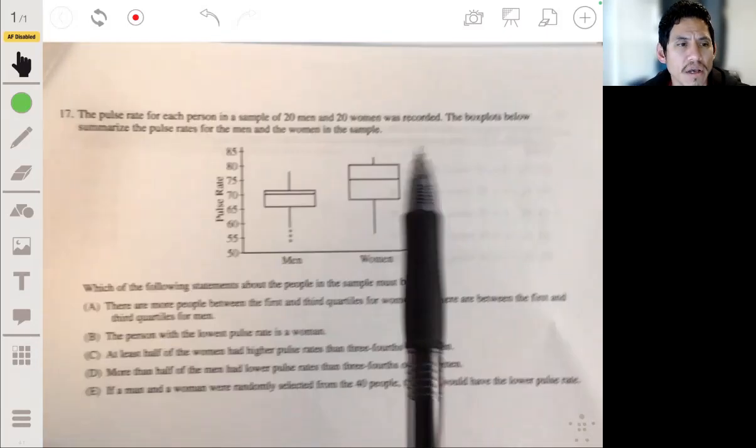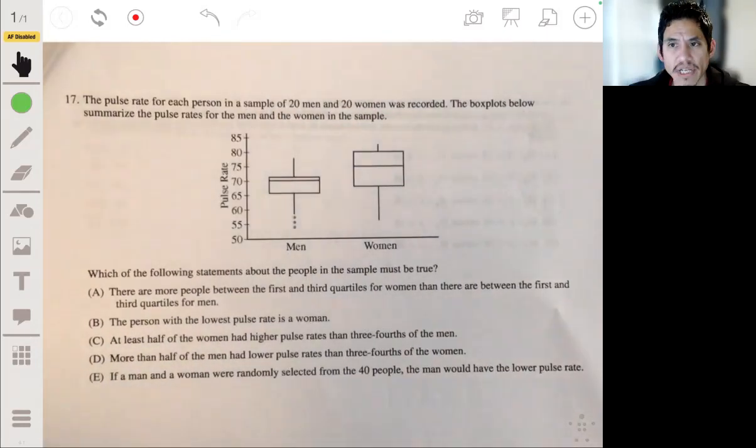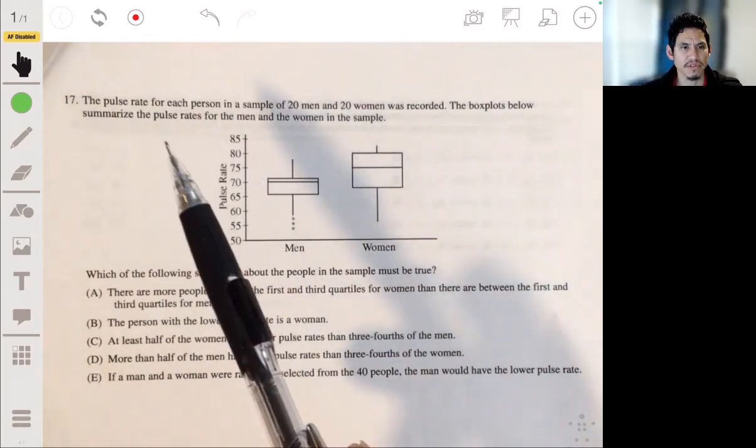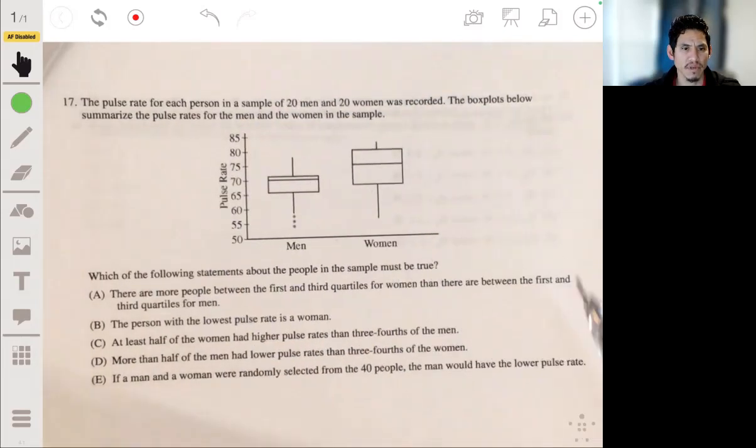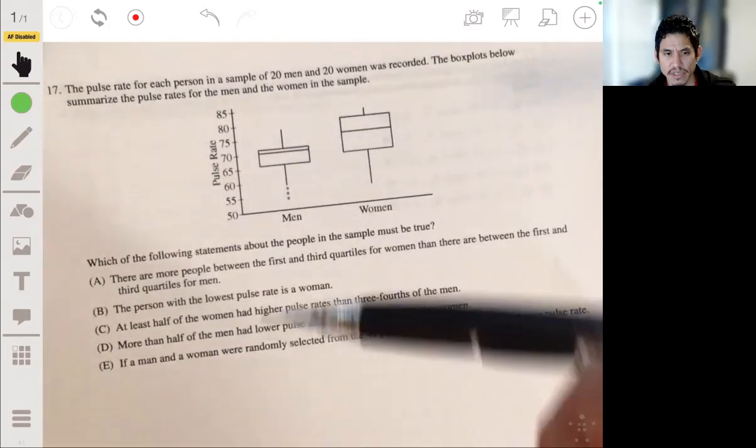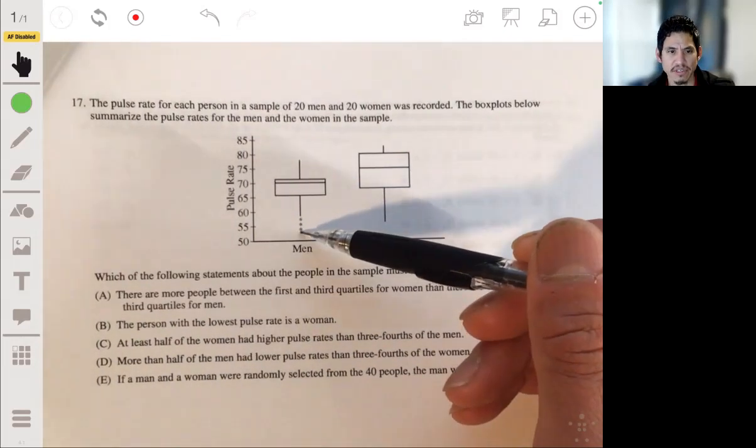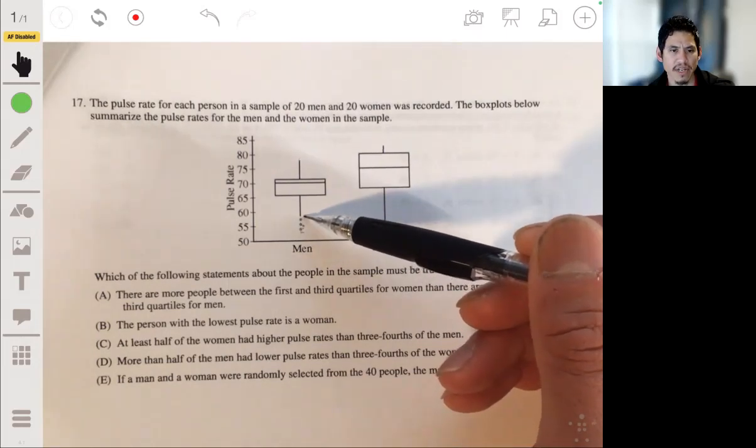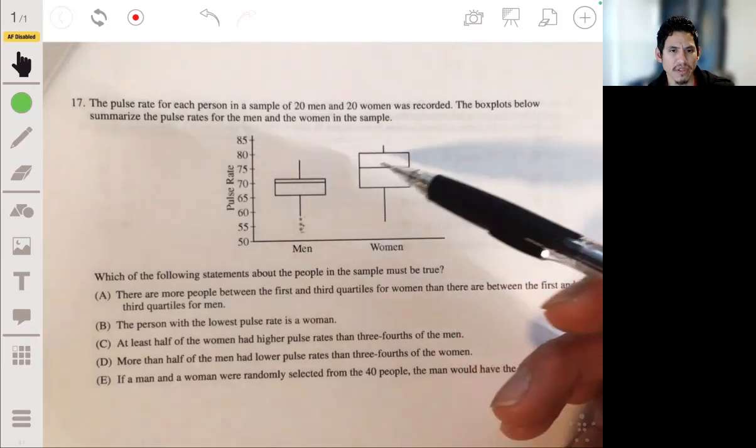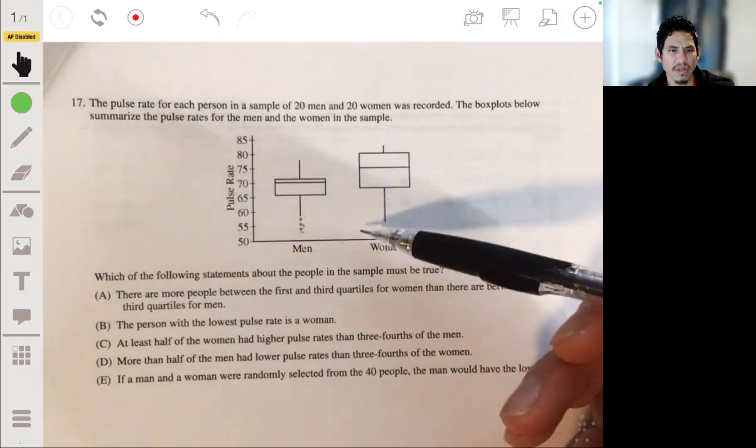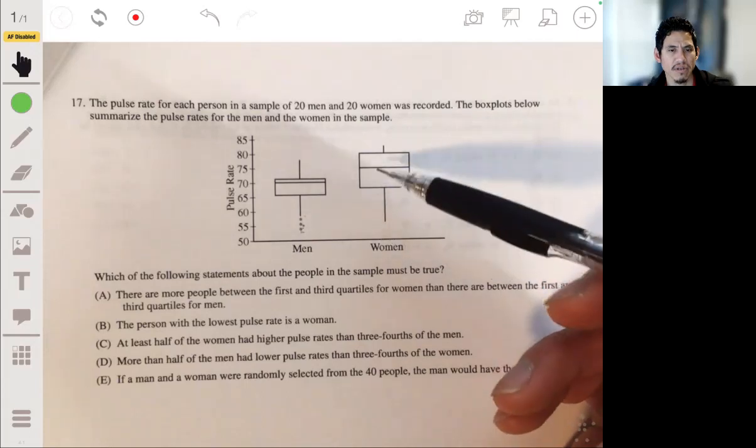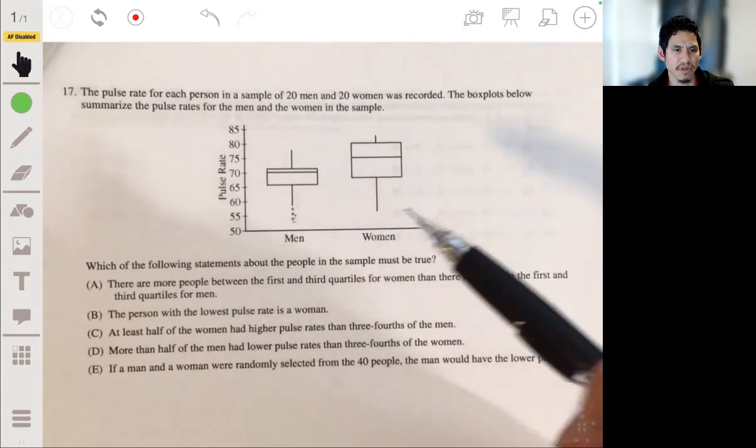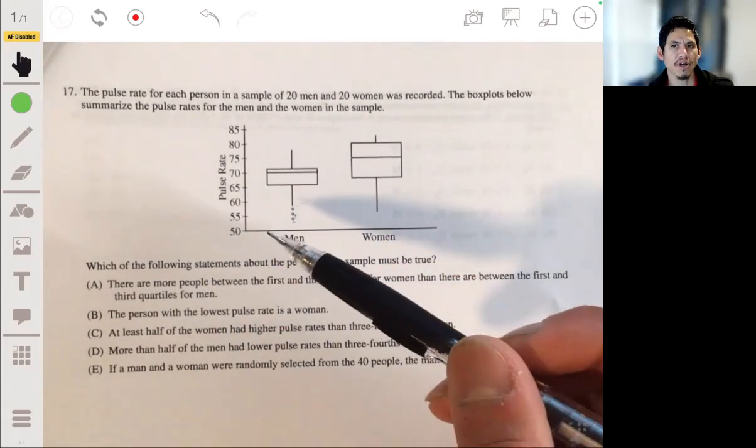Problem 17: The pulse rate for each person in a sample of 20 men and 20 women was reported. The box plots summarize the pulse rates for the men and women in the sample. So the pulse rates for men, these stars are outliers. We got a couple of outliers for the men, and then the women may be a little higher overall. Now let's see which of these statements in the sample must be true. So this is testing that you know how to read your box plots.